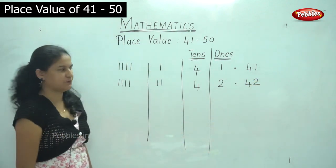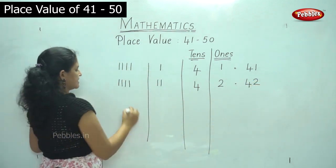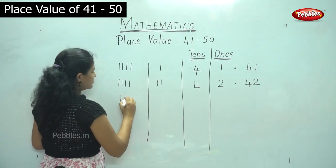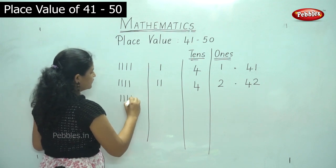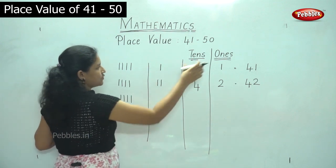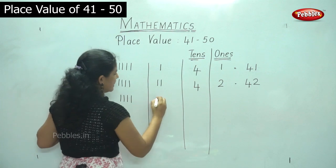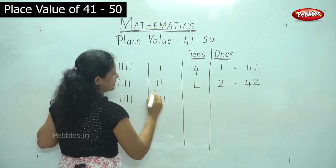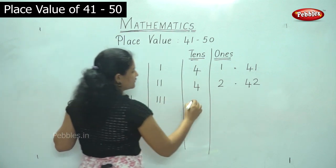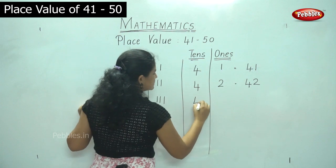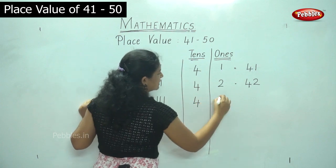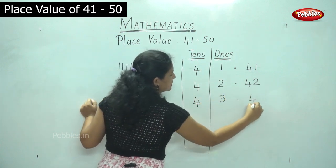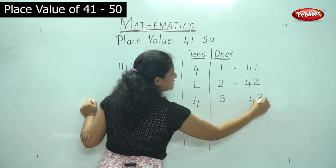Next I have 1, 2, 3, 4 — 4 tens — and in the ones place I have 1, 2, 3 — 3 ones. So I have 4 tens and 3 ones and it gives me the number 43.